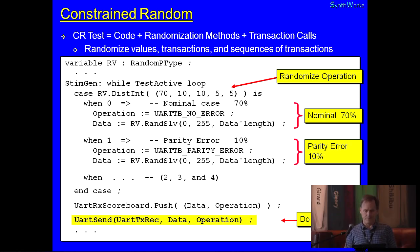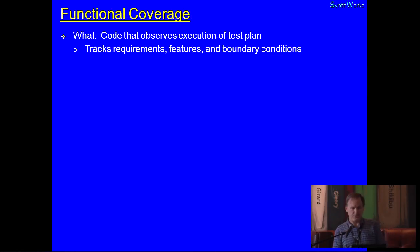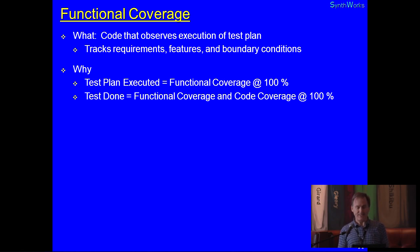Now, the other thing we come up against is functional coverage. And functional coverage is simply code that observes what the test do. Because as soon as you start randomizing, if it's true constrained random, you don't know what the test did anymore. You don't know if it hit the end points. So, we need to track our requirements, our features, our boundary conditions with our functional coverage. And this tells us that we've actually done everything.